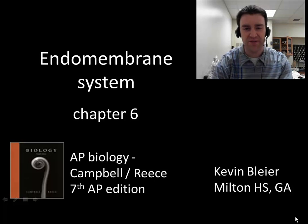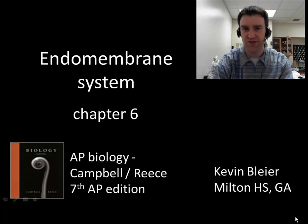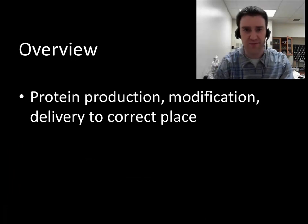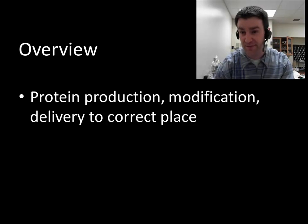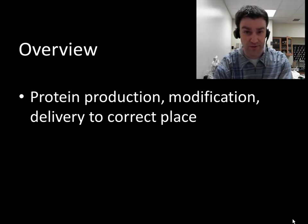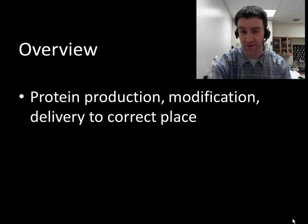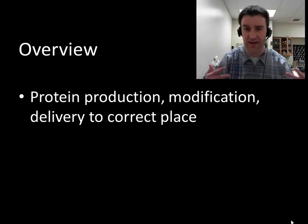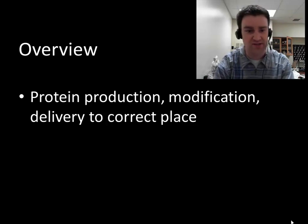In this video we're going to cover what's called the endomembrane system, which is a series of organelles in eukaryotic cells whose job it is to make proteins, modify them, and send them to the right place in the cell. This is going to be really important for a biology course because proteins do all the chemical jobs for cells. Eukaryotic cells have the organelles to do the extra modifications that prokaryotes can't do.